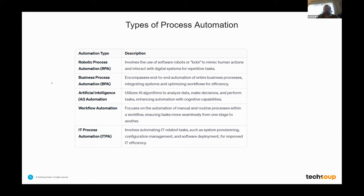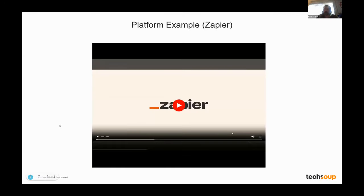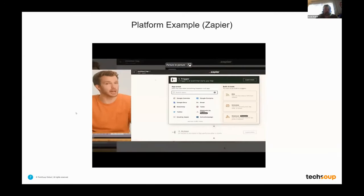To get away from the generalization into the more specific, there are things like robotic process automation, business process automation, AI, workflow automation, and IT process automation as well. Here are the tools of the trade: Zapier, Power Automate which is part of Microsoft 365, and MuleSoft. There are way more than this, but let's see what this looks like in action.